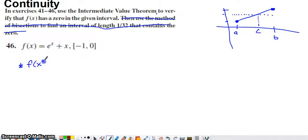So f of x is continuous since, well if you look at these pieces individually e to the x is continuous everywhere and x is continuous everywhere. And if you have the sum of two continuous functions that's going to be continuous everywhere. So f of x is continuous since it's the sum of two other continuous functions.